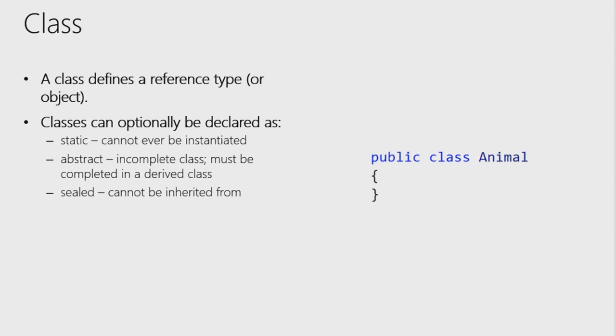An abstract class also cannot be instantiated, but the key difference is that an abstract class is an incomplete class — it may define behaviors that need to be implemented by anyone who inherits from it. It creates a template that needs to be inherited. For example, if you have a dog that inherits from animal, nobody is going to instantiate an 'animal' — there's only a dog and a cat — so you would mark animal as abstract.